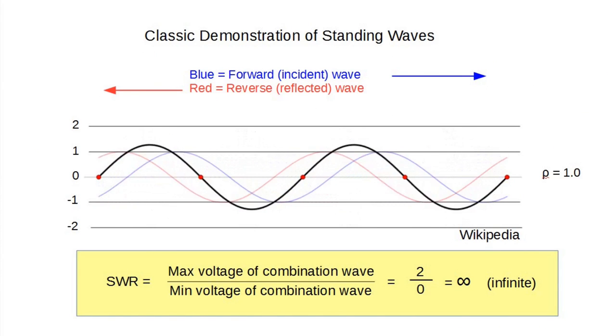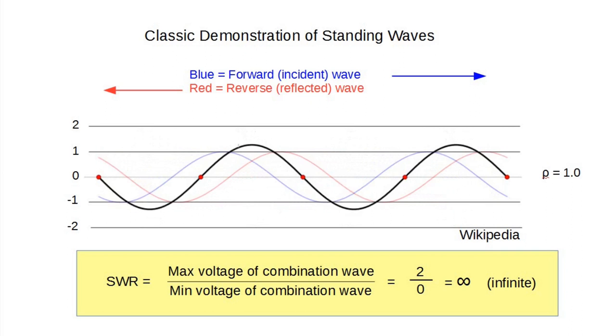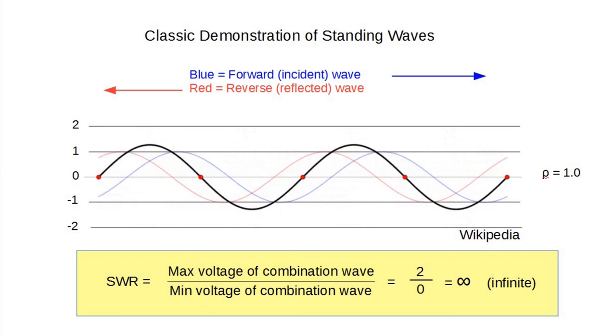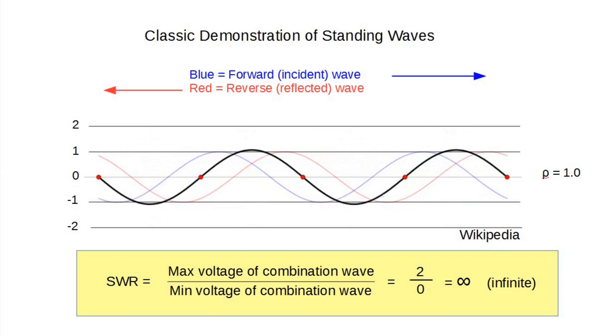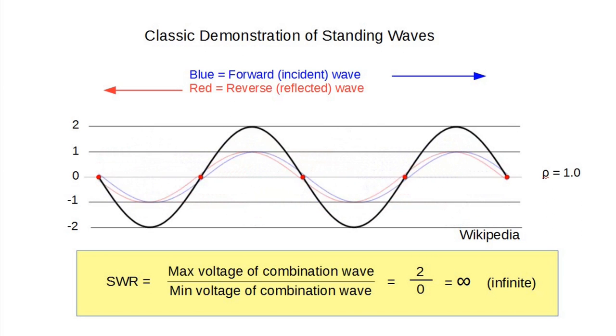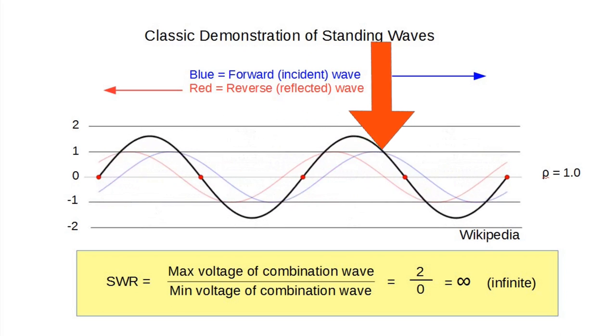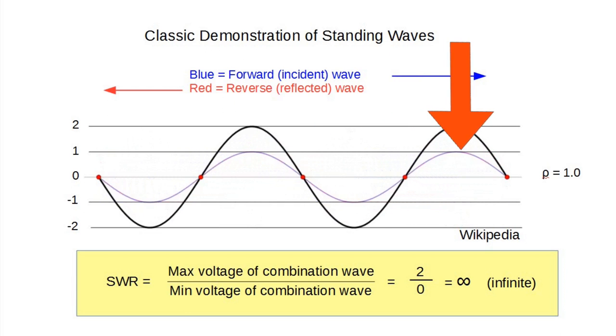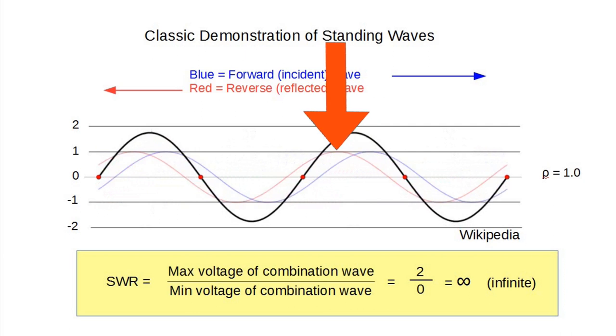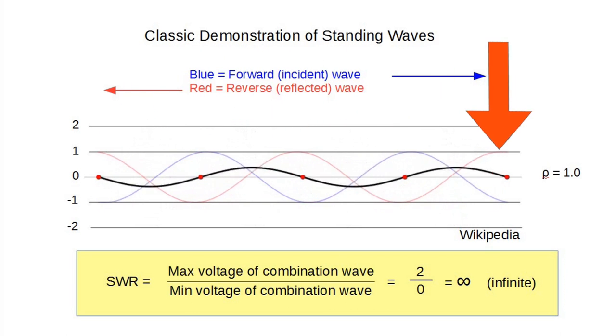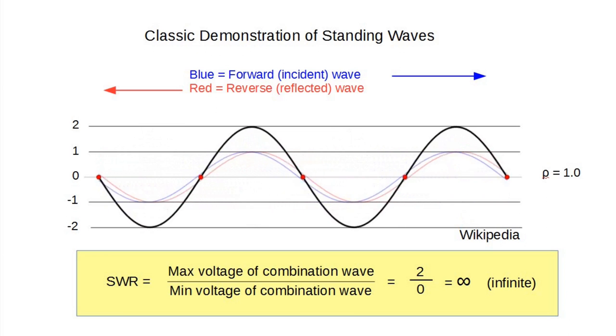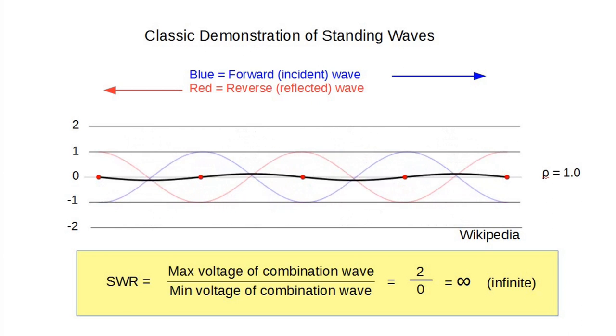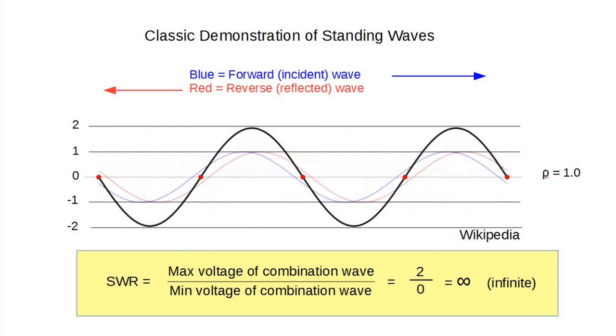This animated drawing from Wikipedia shows the classic explanation of a standing wave. This case, which in practice would mean a completely broken antenna system, has a reflection coefficient of one, meaning all the power is reflected, leaving none to be radiated. The forward wave is in blue, and you can see the arrow following the crest of the blue wave from the transmitter toward the antenna. The reflected wave is in red, and you can follow the arrow to see it head back toward the transmitter. Now, the black wave is the instantaneous sum of the two waves. It looks like a wave just standing there. It isn't going anywhere, so the sum of the power transfer is zero.